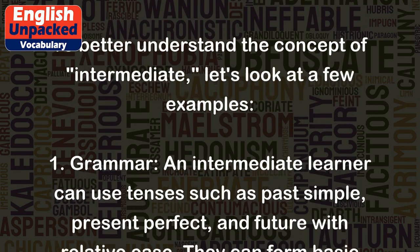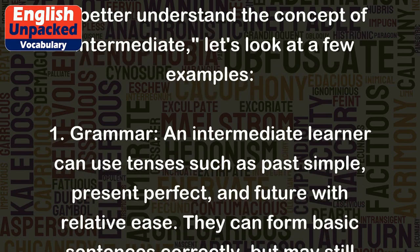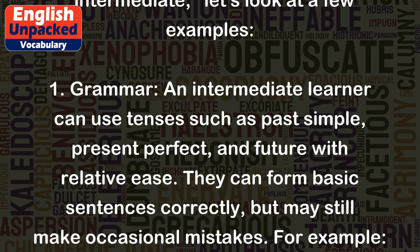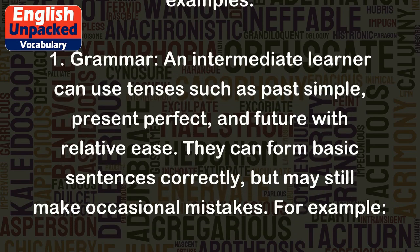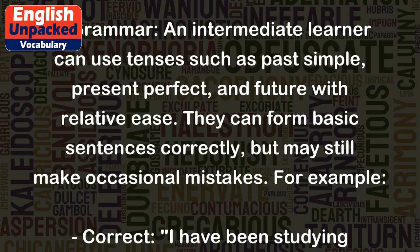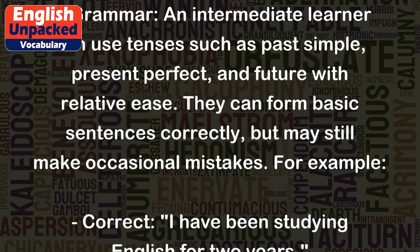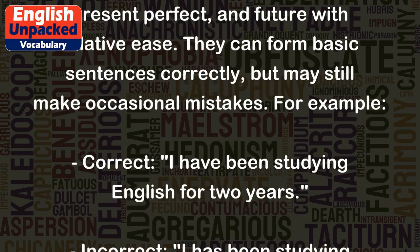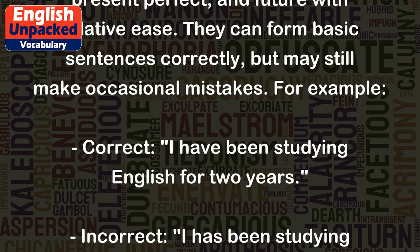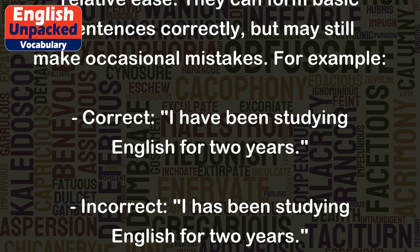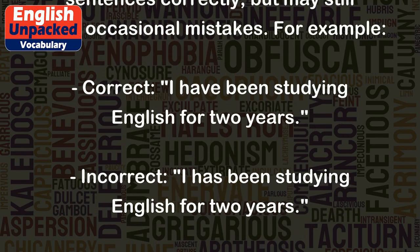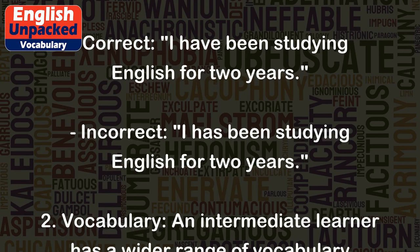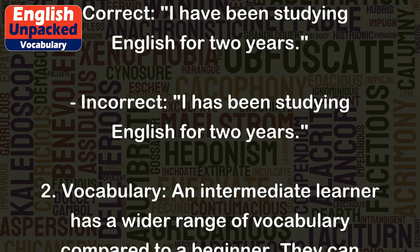Grammar: An intermediate learner can use tenses such as past simple, present perfect, and future with relative ease. They can form basic sentences correctly, but may still make occasional mistakes. For example, correct: 'I have been studying English for two years.' Incorrect: 'I has been studying English for two years.'